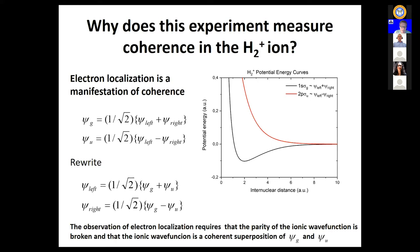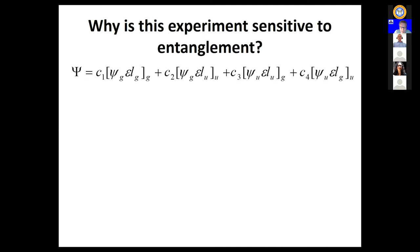Why is this experiment sensitive to entanglement? Writing down the general form of the ion plus photoelectron wave function for the H2+ plus electron system, we see two choices: producing an ion in the 1s sigma g (gerade) or 2p sigma u (ungerade) state. Additionally, the accompanying photoelectron also has a parity — gerade if its angular momentum is even, ungerade if odd. This gives four combinations of ionic and photoelectron states, and the moment we have more than one product term, we have an entangled system.